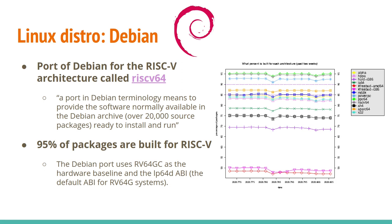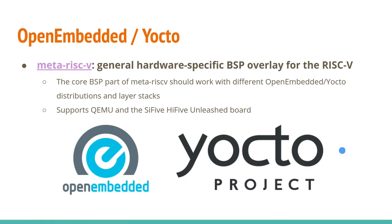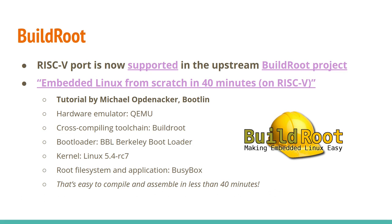Debian has also been working on a port. For Debian, a port means it can run the huge Debian archive of about 20,000 packages, with the goal of being able to install and run all of them. A graph from the Debian ports website shows RISC-V near the top — about 95% of those 20,000 packages are now building for RISC-V, which is a great sign. If you don't need a full Linux distro, there's support in OpenEmbedded and Yocto project with Meta-RISC-V, and also BuildRoot — support is now in the upstream BuildRoot project for RISC-V. Michael from Bootlin has a great embedded Linux from scratch in 40 minutes on RISC-V tutorial.